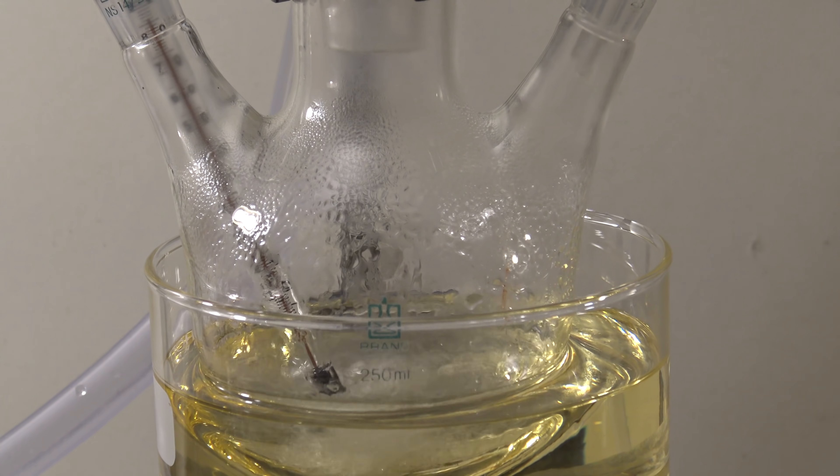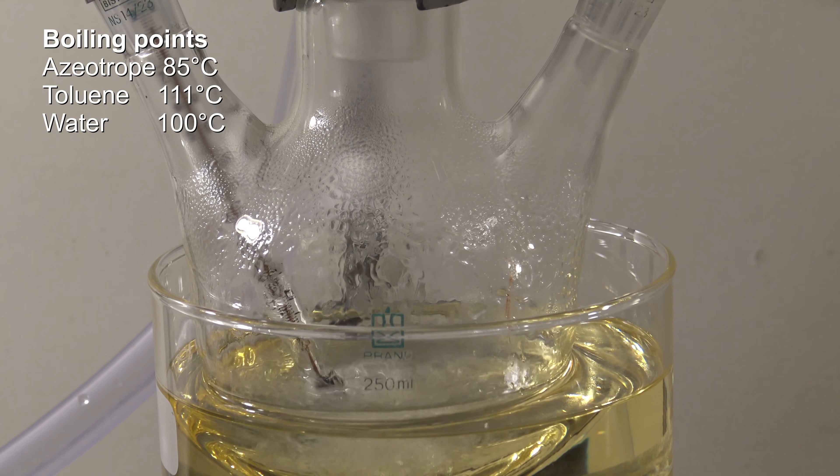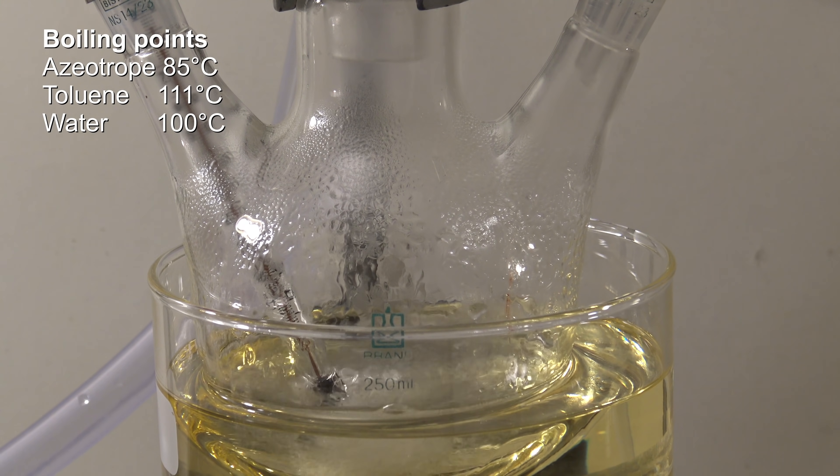Toluene and water do form an azeotrope which boils at 85 degrees Celsius, which is also used to remove water from the reaction mixture in some syntheses.